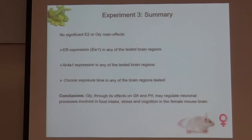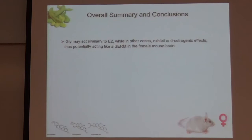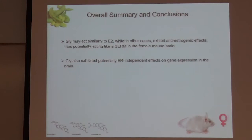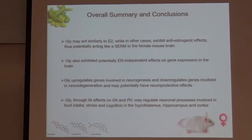In summary: we had glyceolin main effects at two hours for growth hormone expression in all three brain regions, significant glyceolin main effects on prolactin at two and 24 hours in the hypothalamus and at two hours in the cortex but not hippocampus, and a trend toward ESR1 downregulation by estrogen in the hypothalamus and by glyceolin in the hippocampus. We did not see effects of estrogen or glyceolin on estrogen receptor expression, no effect on NR4A1 expression, and no effects at the chronic time point. Through its effects on growth hormone and prolactin — especially acutely — glyceolin may regulate food intake, stress, and cognition in the female mouse brain. We were wrong about most of our hypotheses, but that's science.